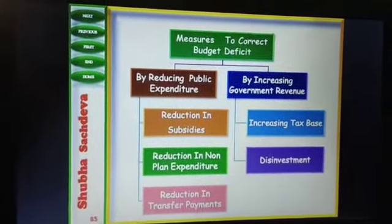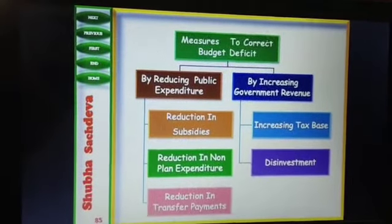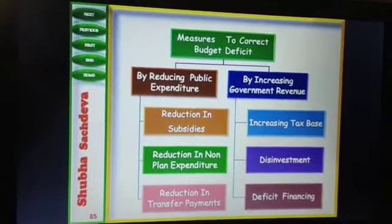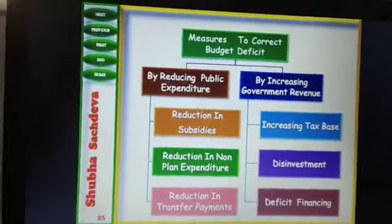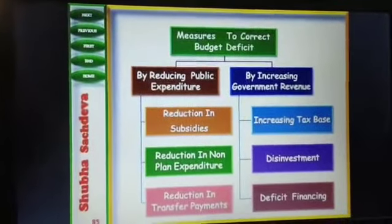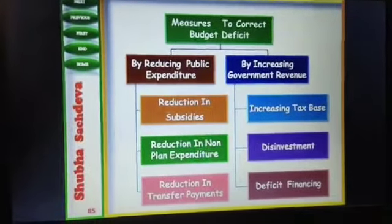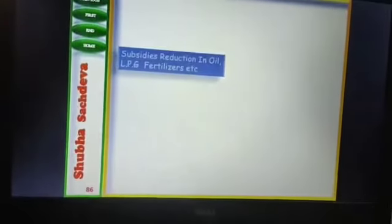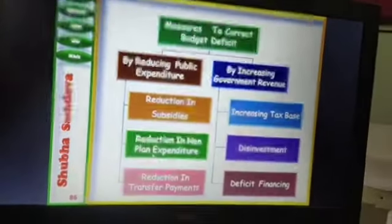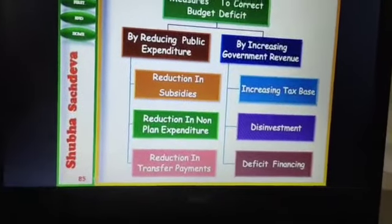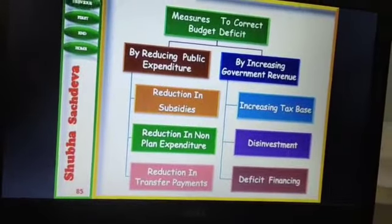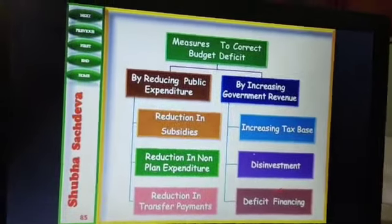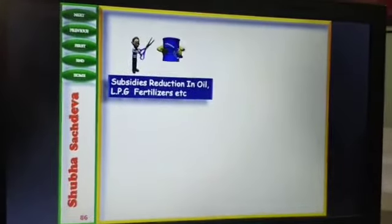When we talk about government revenue, the government may increase the tax base. The government may also do disinvestment — meaning the government can sell part or the whole of its shares to the private sector and get money. The third method is deficit financing, where the government borrows money by asking the RBI to issue new currency against some securities.